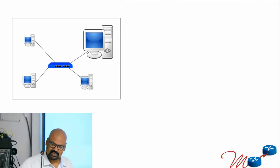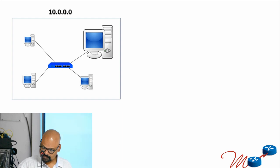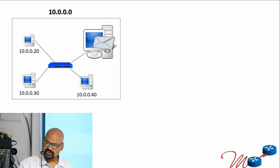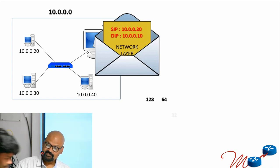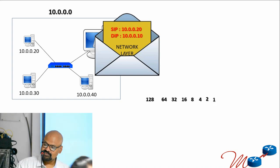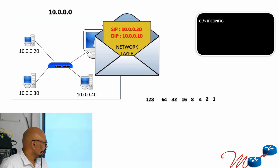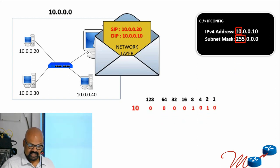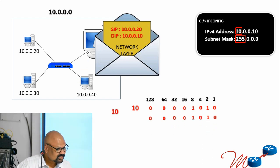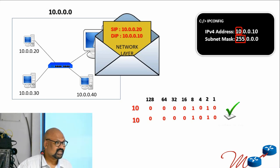When data is entering into the system, the system checks whether it is mine or not. It opens those eight bits — 128, 64, 32, 16, 8, 4, 2, 1 — because you said this is your mask. It takes the first eight bits and compares them with the first eight bits of the incoming address. If they are the same, it is mine; if not, it is not mine.